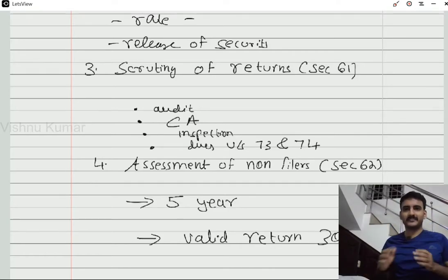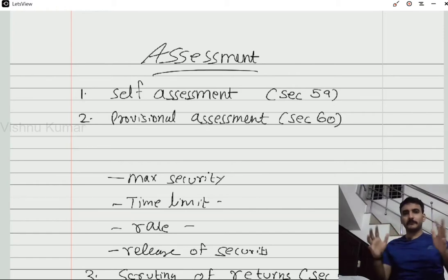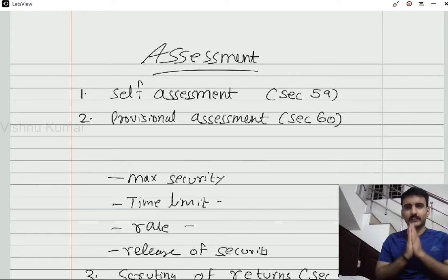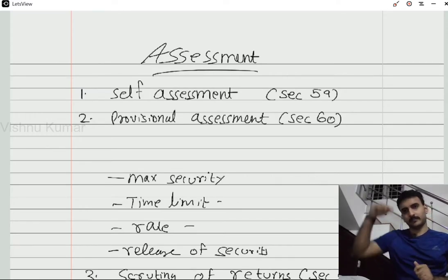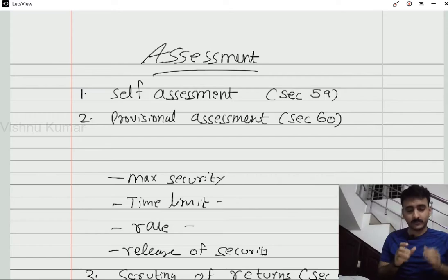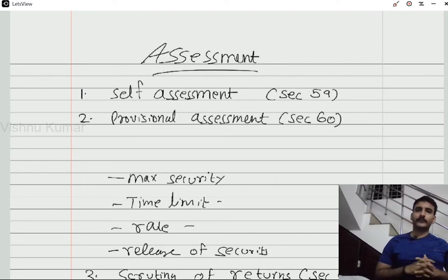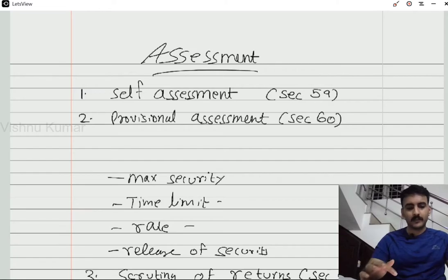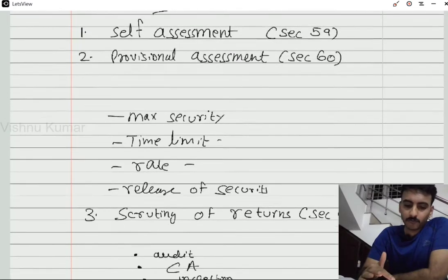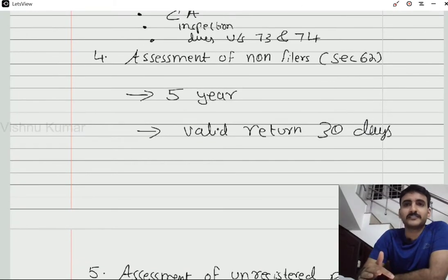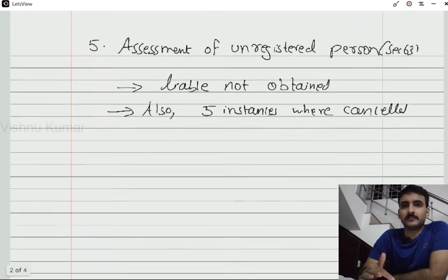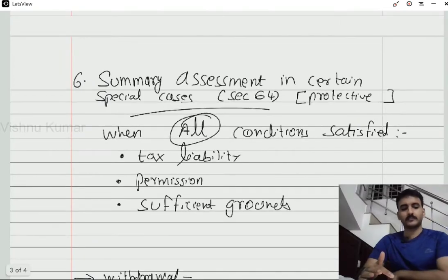Hello guys, welcome to this video. In this video, we will be covering a topic called assessment — a small topic in GST. I will put the timestamps in the description box so you can cover particular sections. We will cover: self-assessment under section 59, provisional assessment, scrutiny of returns under section 61, assessment of non-filers under section 62, assessment of unregistered persons under section 63, and summary assessment in certain special cases.